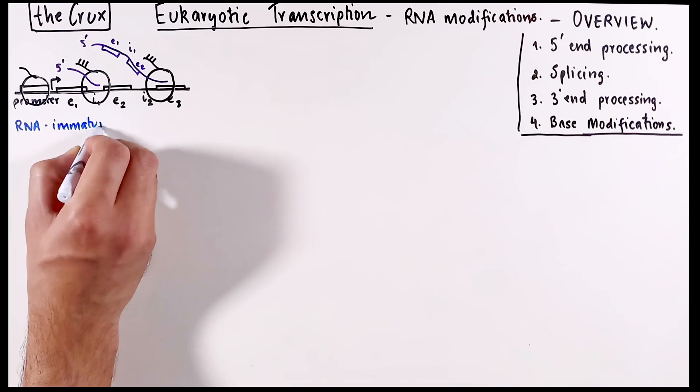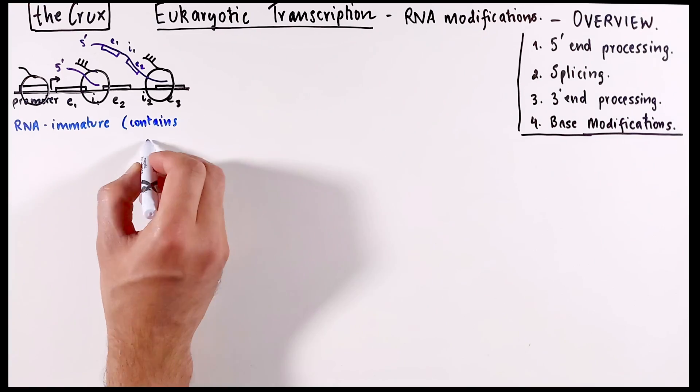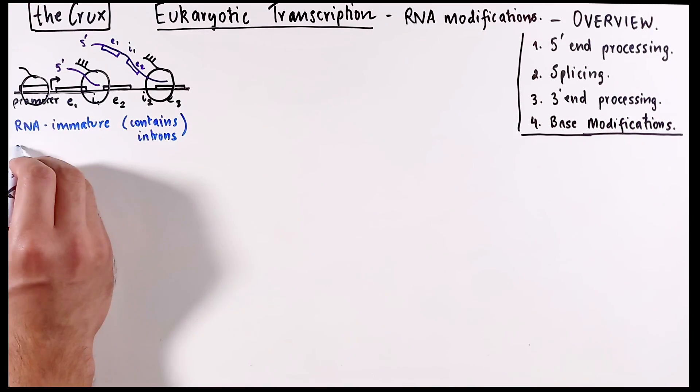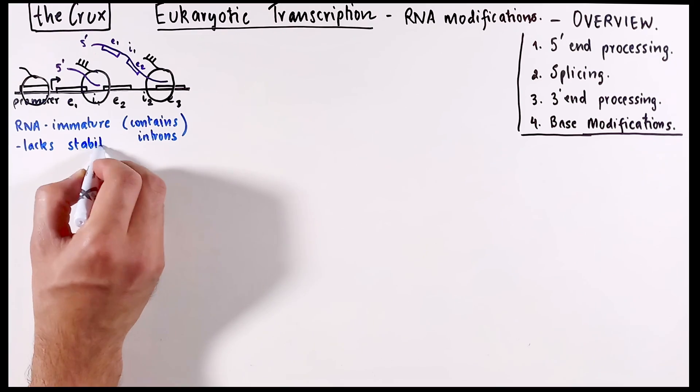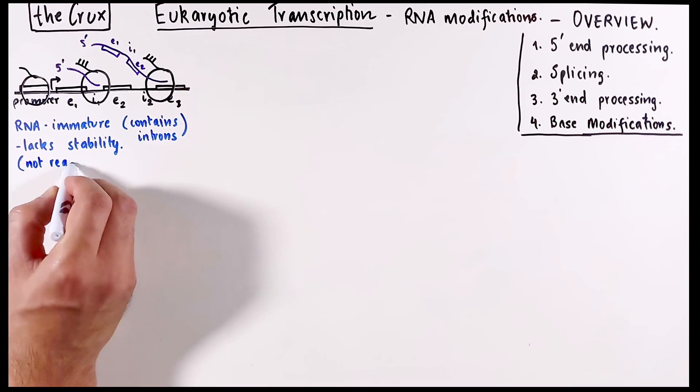So the fresh RNA that is made is immature RNA, meaning that it contains introns, it also lacks stability, and it's not ready for the next step, which is the step of translation where the protein is made. So it needs some modifications.